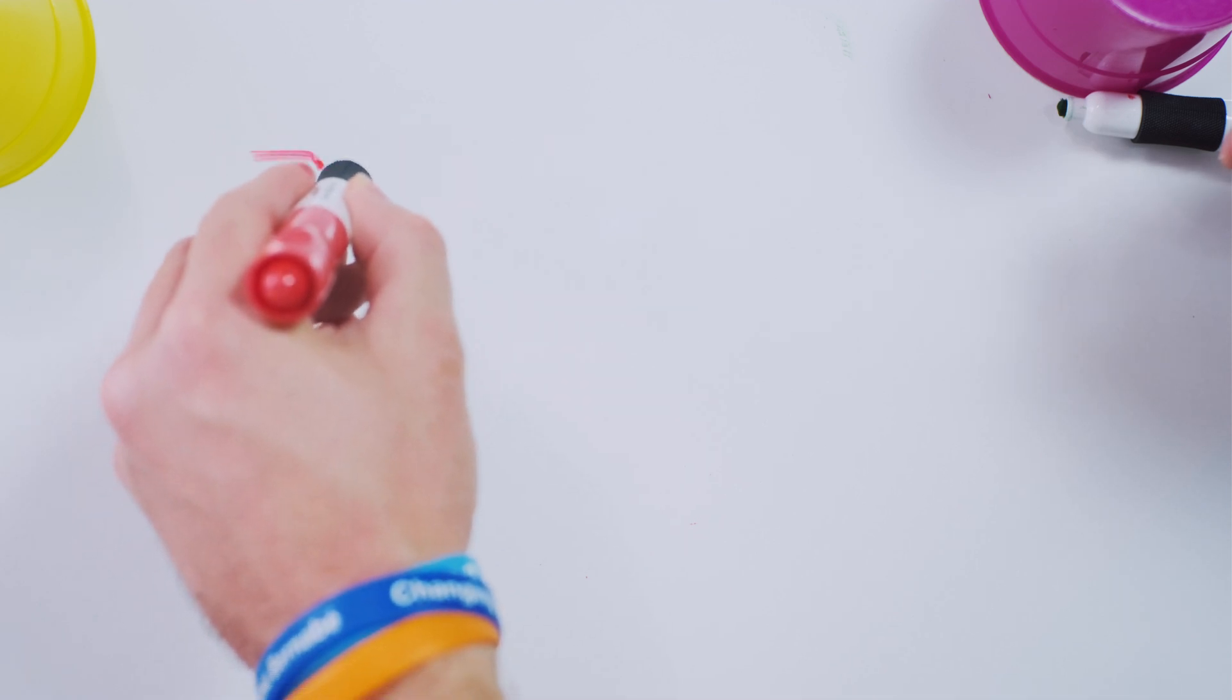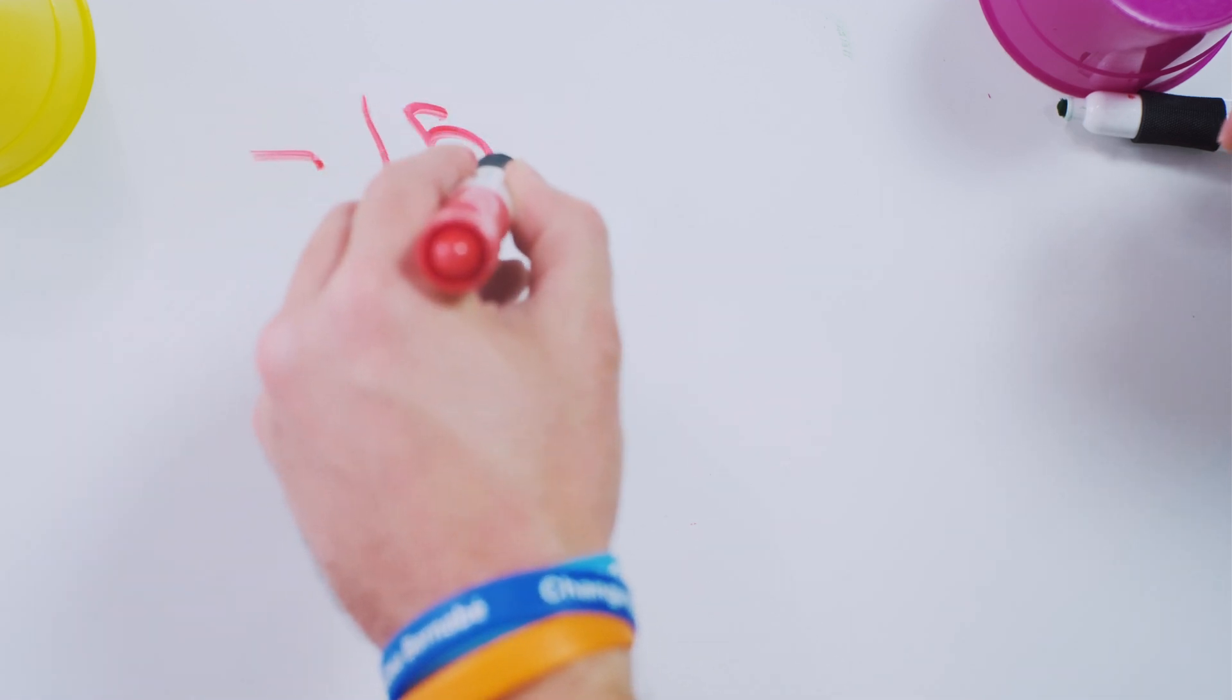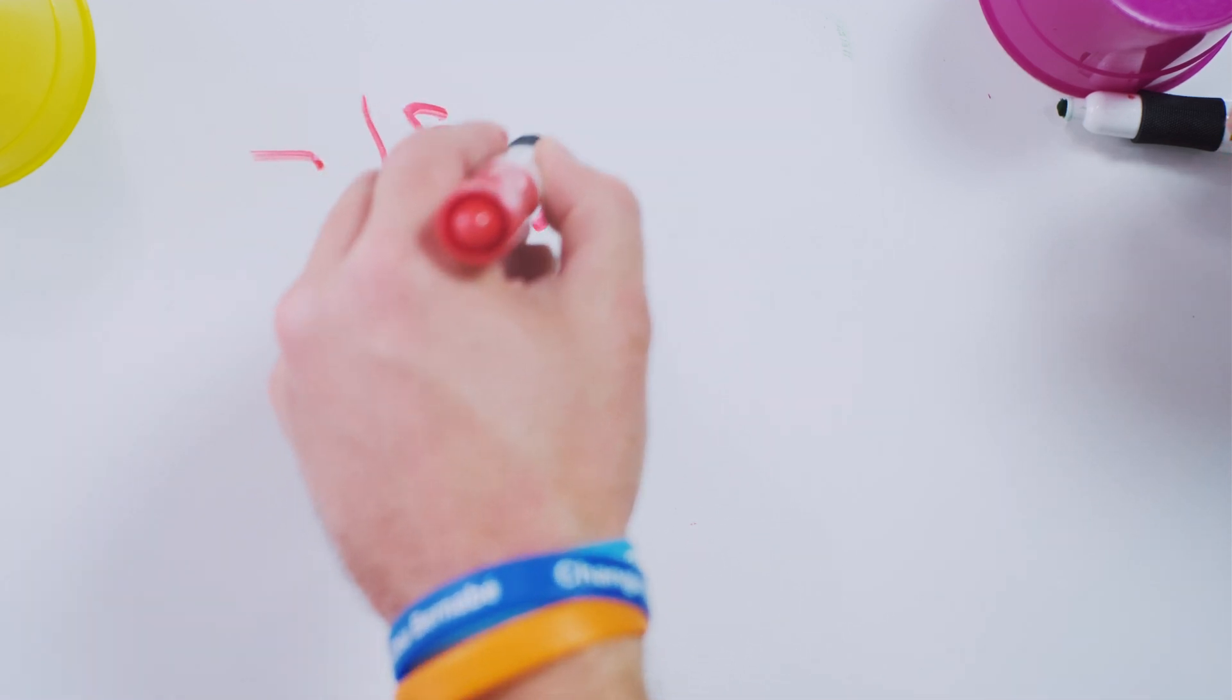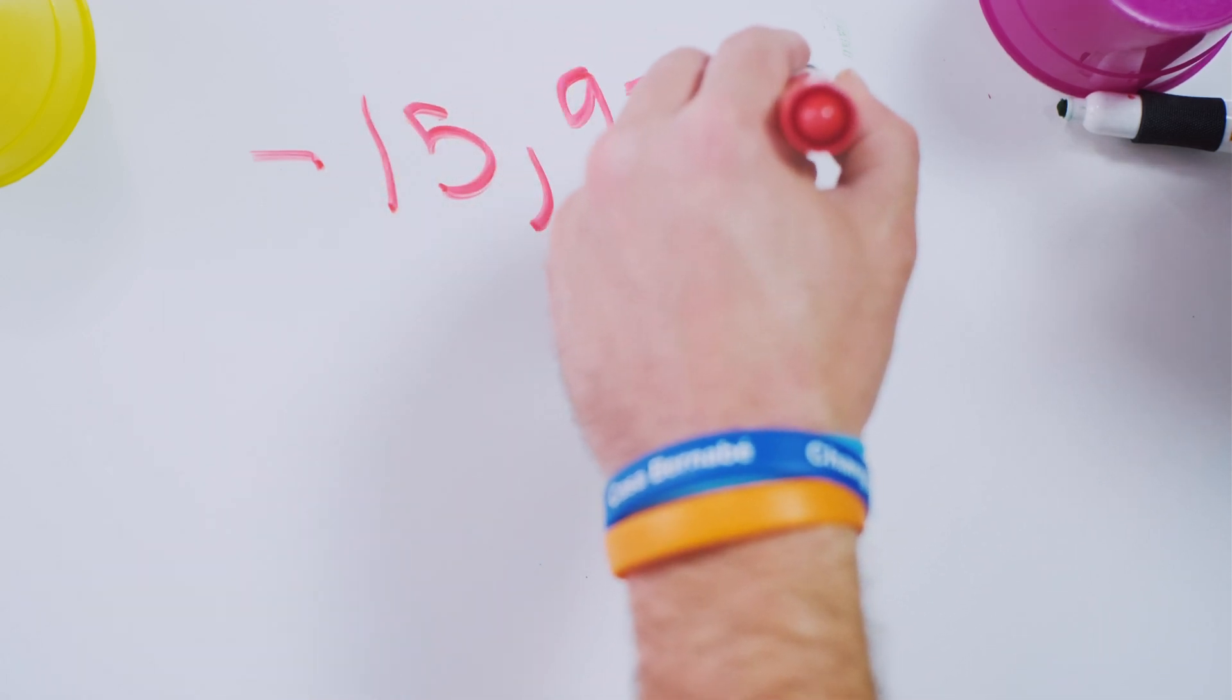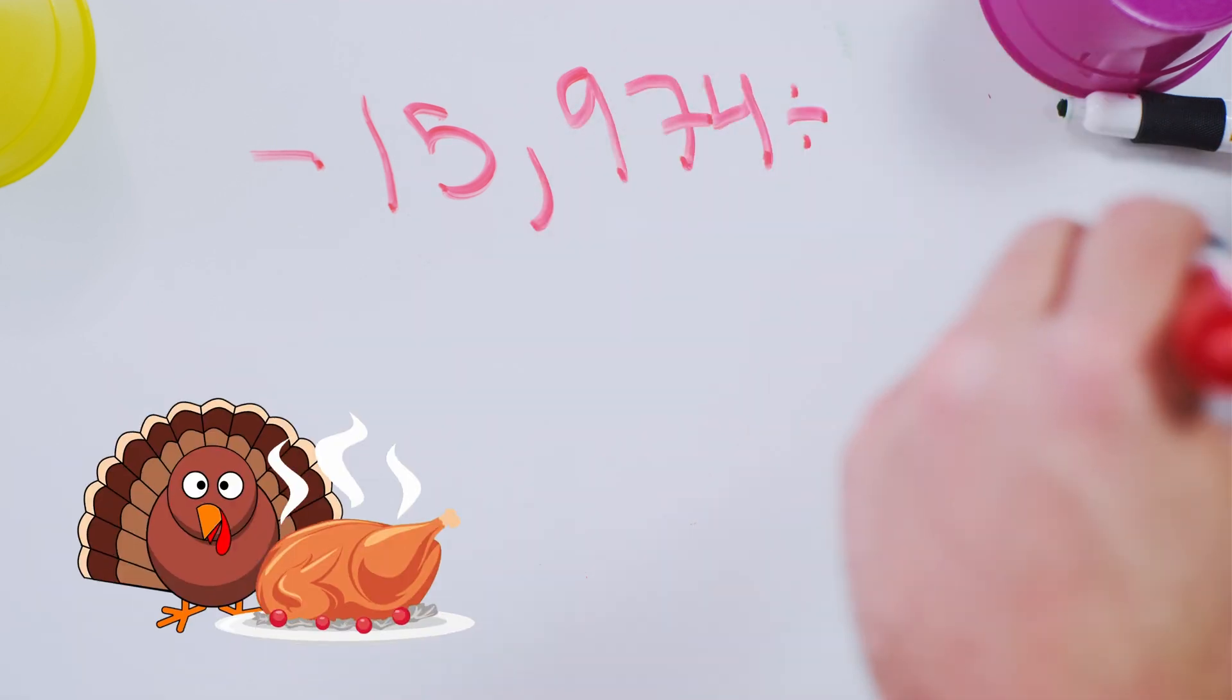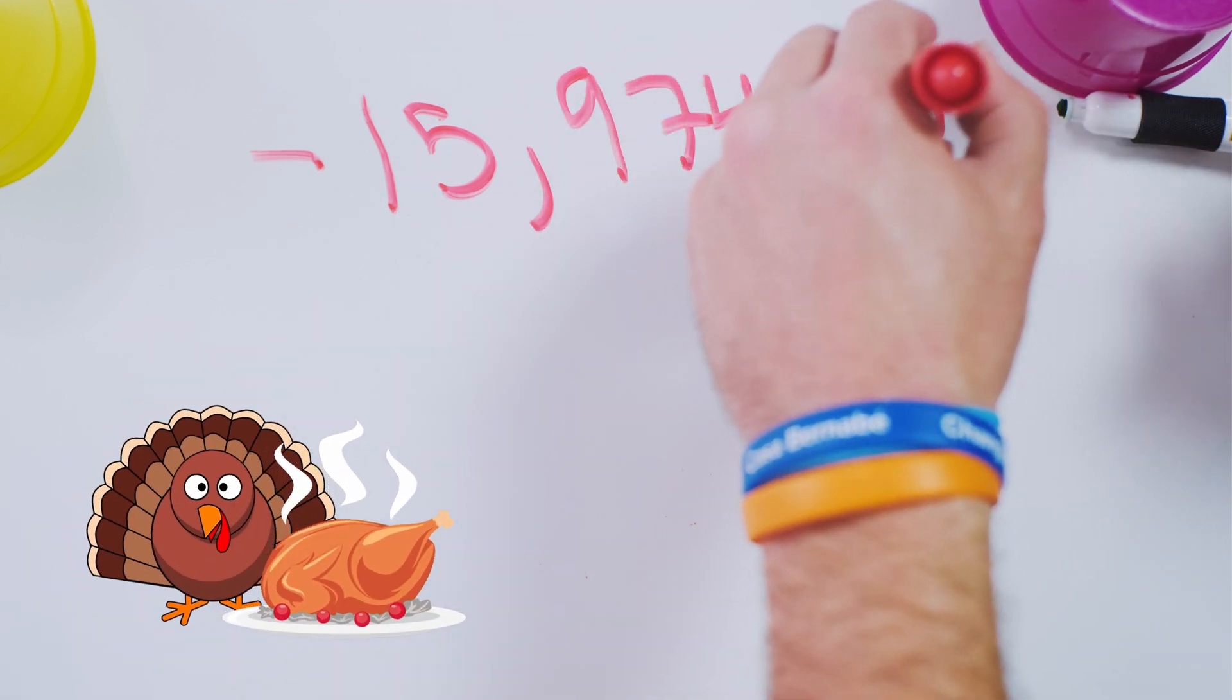Let's do another problem. Now we got to give you something really scary. Negative 15,700. No, let's do 974. And let's divide this turkey, gobble gobble, by 100.